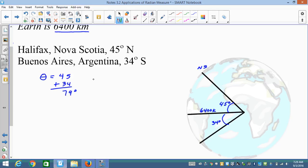But remember, theta has to be in radians. So in radians, theta equals 79 pi over 180. You don't even have to reduce it. We're just going to throw it into the value when we get done. So we have S equals 6,400 times 79 pi over 180.